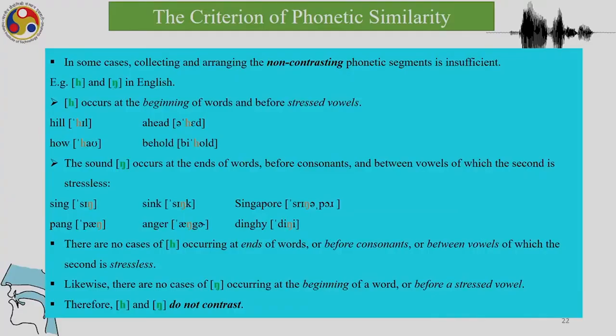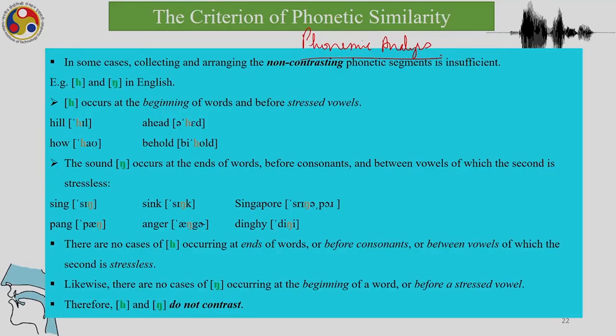Now that we have understood phonemes, their phonological organization in the mind, and the psychological reality of phonemes, let us look at some other aspects of phonemic analysis — the criterion of phonetic similarity. In some cases, collecting and arranging non-contrasting phonetic segments is insufficient, as with /h/ and /ŋ/ in English. /h/ occurs at the beginning of words and before stressed vowels; /ŋ/ occurs at the end of words, before consonants, and between vowels of which the second is stressed — as in 'sing', 'sink', 'pang', 'anger', 'dinghy'.